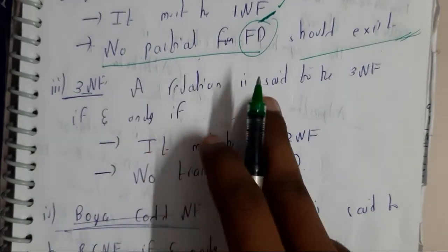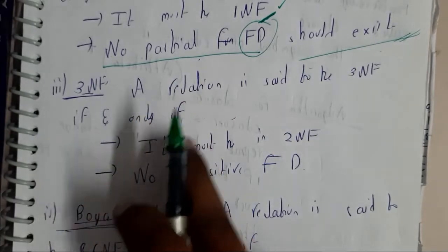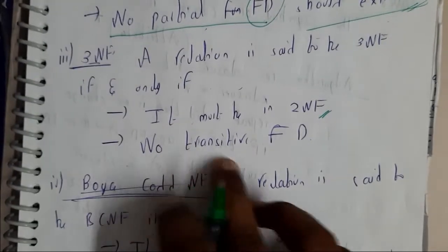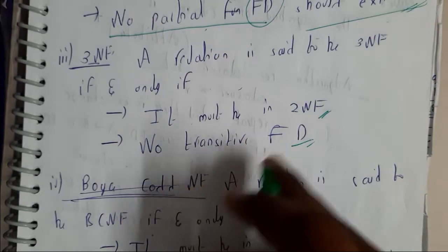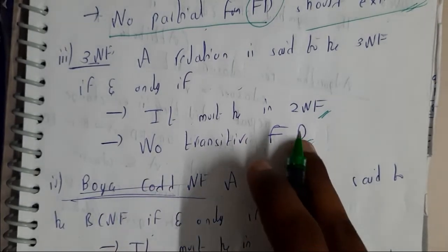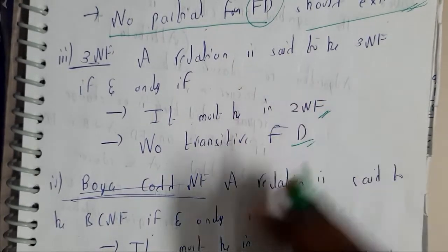So 3NF, any relation is said to be 3NF if and only if it must have second normal form and no transitive functional dependency should exist. If any transitive functional dependency exists it comes under third normal form.